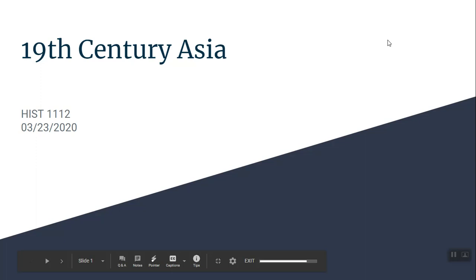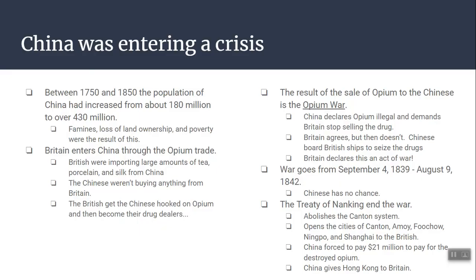Now let's talk about 19th century Asia. You might ask why India is not included — that's because India is more of an imperialism topic, mainly because of Britain and the British Empire, so you'll learn about India in a couple of days. When we get to the 1800s, China is entering a crisis. On the outside China looks very strong, but in reality things are starting to fall apart. The big reason is population increase — between 1750 and 1850 alone, almost 200 million people are added.